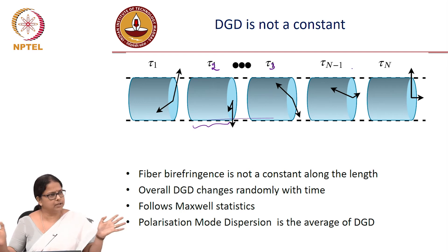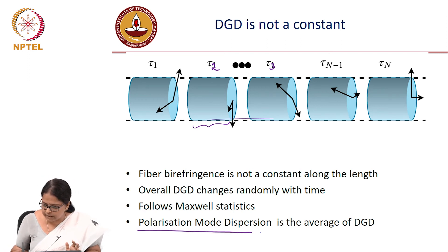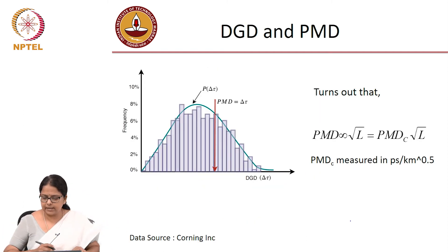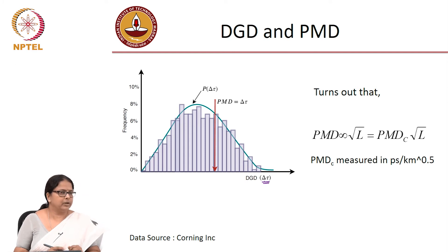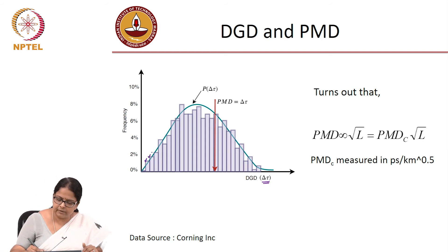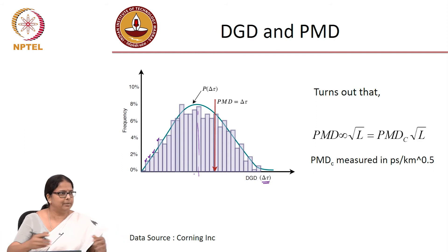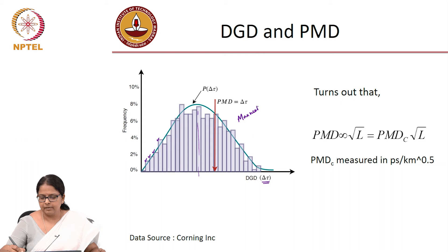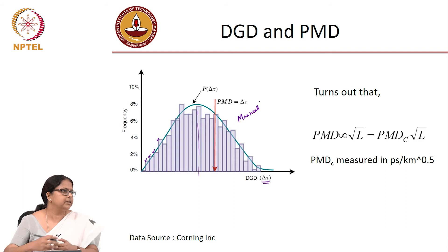It turns out the whole process follows Maxwell statistics. What is quoted as polarization mode dispersion is the average of the differential group delay. If you lay a fiber and keep measuring delta tau at different instances of time and different lengths of the fiber — as shown by Corning measurement data — you get different values of delta tau. Doing a histogram of that data gives the Maxwell statistics curve, which is not a Gaussian.